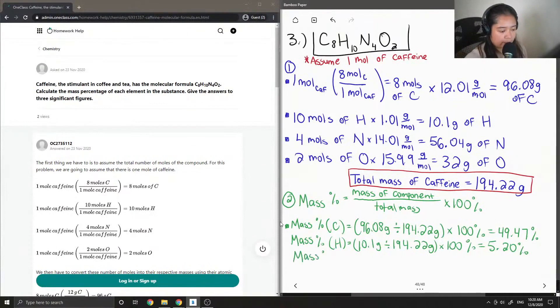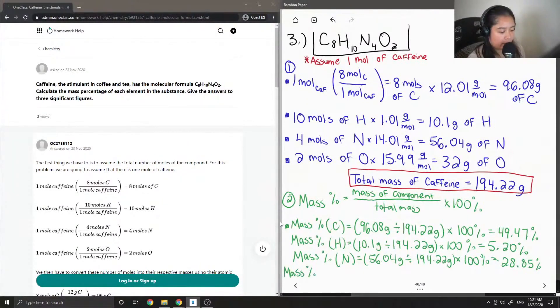For nitrogen, we had 56.04 grams divided by 194.22 times 100 gives 28.85 percent. And then lastly the mass percentage of oxygen is equal to 32 grams divided by 194.22 times 100, is equal to 16.48%.